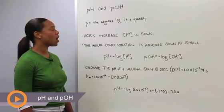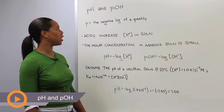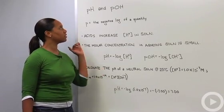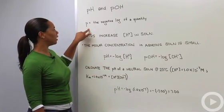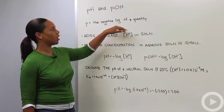Hi, guys. So let's go ahead and talk about pH and pOH. The most simple thing that you need to know first is that p just means the negative log of a quantity.